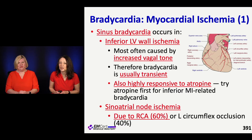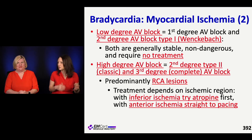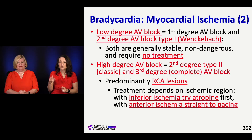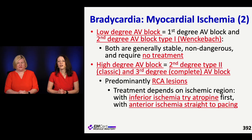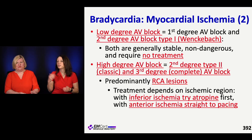SA node ischemia is very common when your RCA is involved, as well as the left circumflex. You may also have myocardial ischemia that impacts your AV node. The lower degree AV blocks — first degree and second degree type 1 (Wenckebach) — are generally stable and don't need treatment. But the higher degree AV blocks are much more serious. Second degree type 2 can progress to complete heart block, and those often involve the RCA. Management depends on the area involved: with inferior ischemia, try atropine; with anterior ischemia, atropine isn't going to help as much, so go straight to pacing.